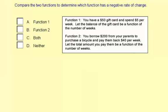Let the balance of the gift card be a function of the number of weeks. So the balance of the gift card, that means the amount left. So if you're starting with $50, that's the initial, and you're spending $5 per week, you're taking $5 off the initial amount of the gift card each time. So that is a negative initial, negative 5.